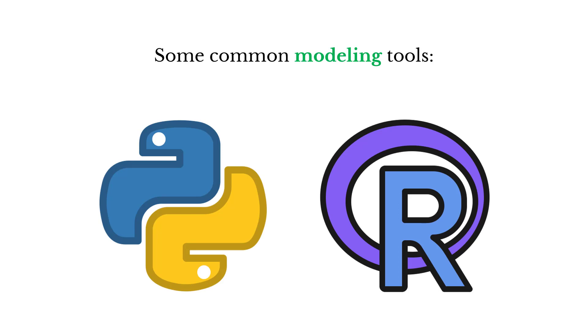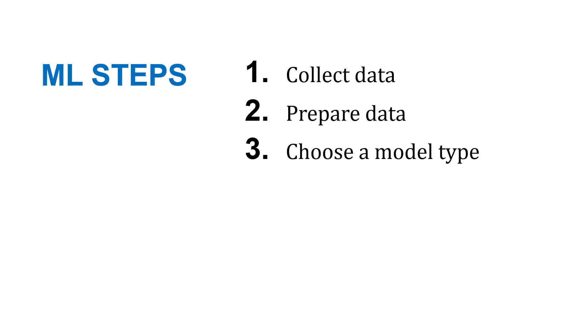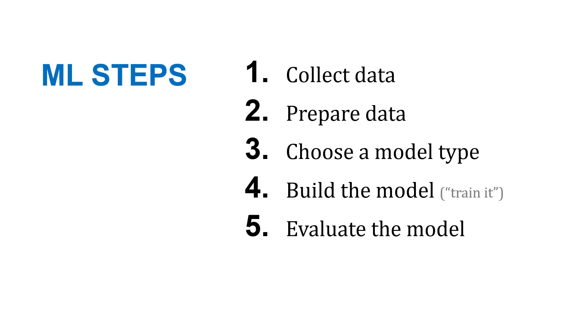Some common modeling tools we could use are two programming languages: Python and R, though these aren't the only options. When performing machine learning, we often repeat these steps: first we collect data, then we prepare that data because sometimes it needs cleaning, we choose a model type since there are a few different options, we build or train the model, we evaluate how it's performing to make sure it's effective, and then we make predictions with it — we deploy it.